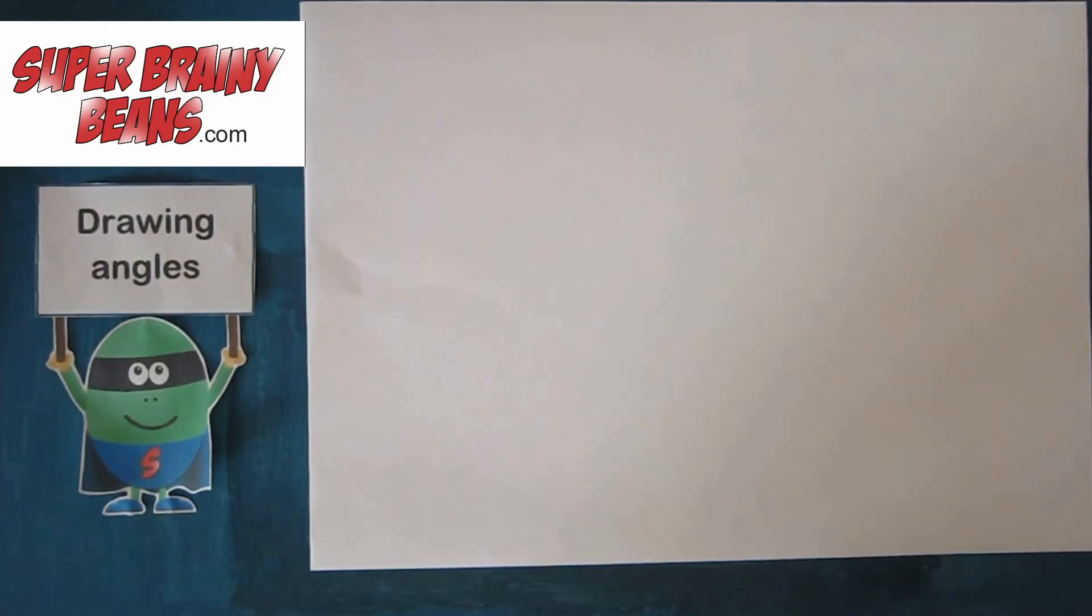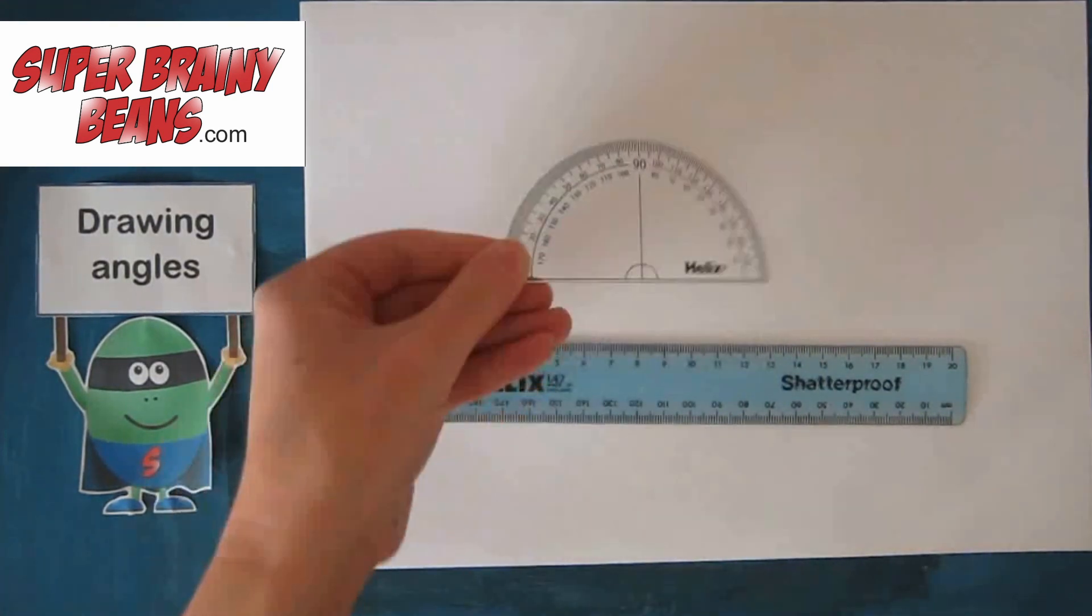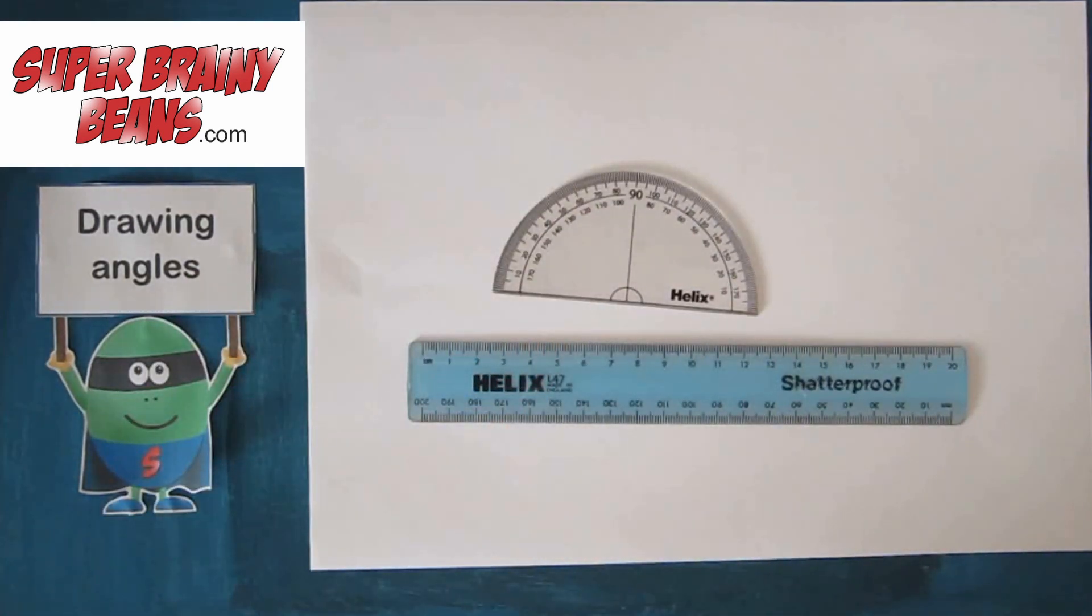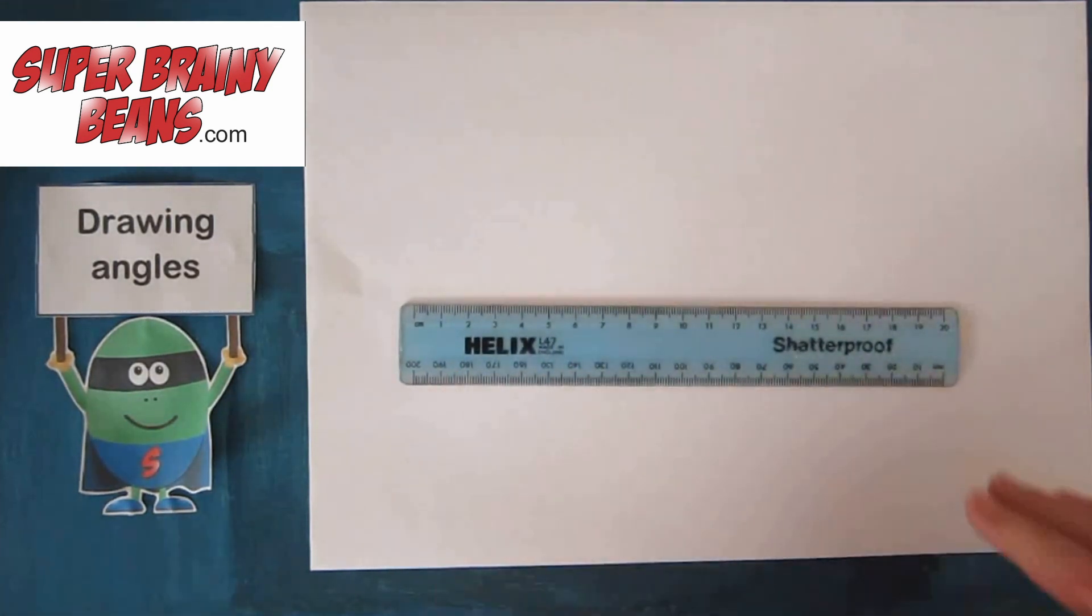To draw an angle you need a ruler and a protractor. First of all we're going to draw a line with our ruler.